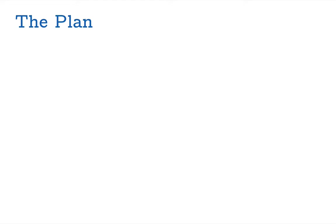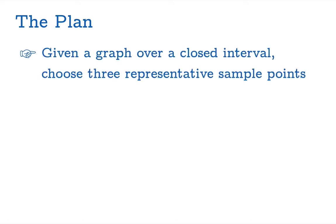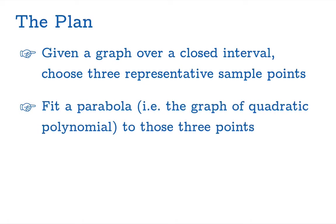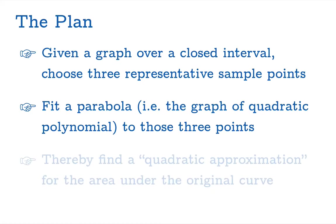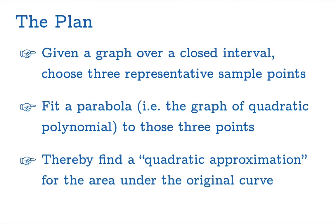So here's the plan. Given a graph over a closed interval, we're going to choose three representative sample points on the graph, then we're going to fit a parabola — in other words the graph of a quadratic polynomial — to those three points, and we're going to use that quadratic polynomial graph to find a quadratic approximation for the area under the original curve.